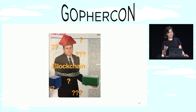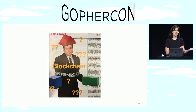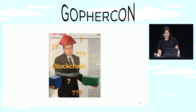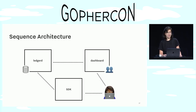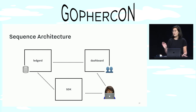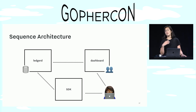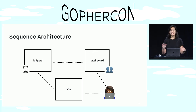So Chain has a product called Sequence, which is a hosted blockchain as a service. The important thing to know here is that Sequence hosts many independent private blockchains in a multi-tenant setup. The relevant part of Sequence's architecture has a couple services. This first service is called LedgerD, it's written in Go, and it owns all of the blockchain logic and provides the API for the core product.